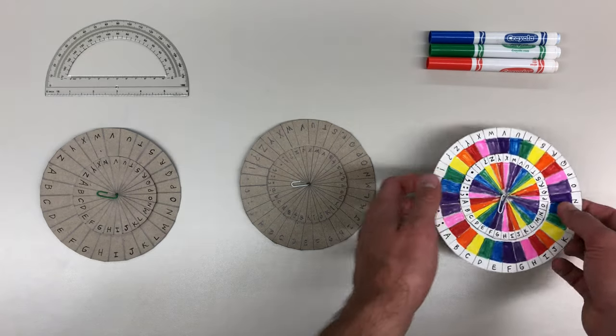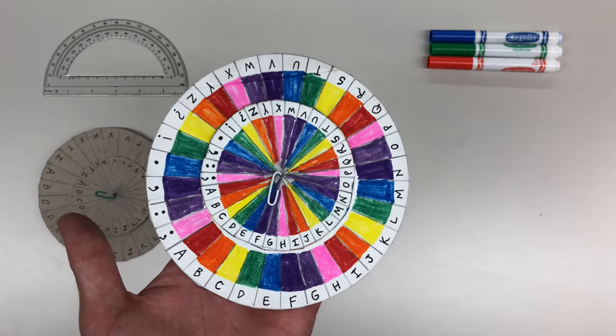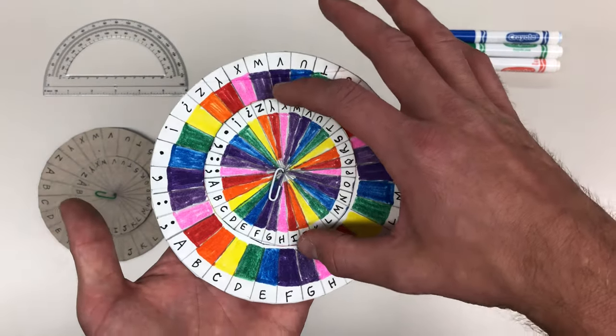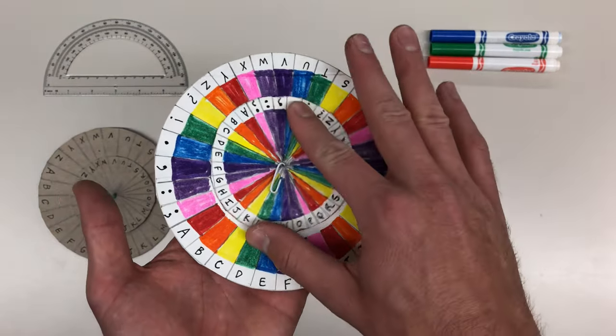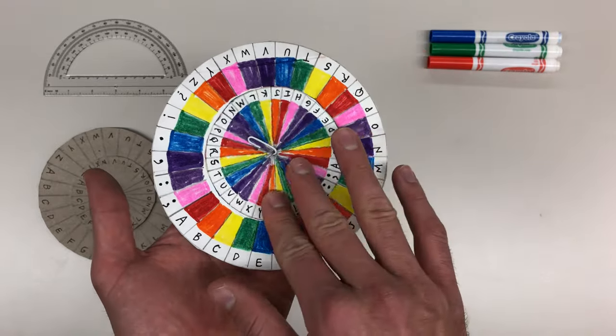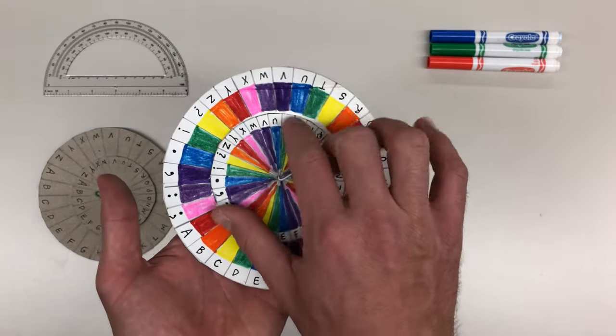Check out some ways that you can iterate and change the design of your cipher wheel. I used markers to create a rainbow effect on this cipher that looks really cool when I use the shift for encryption.